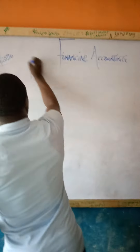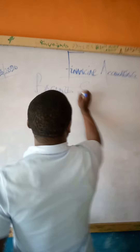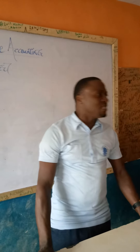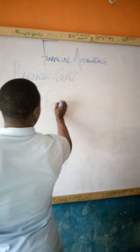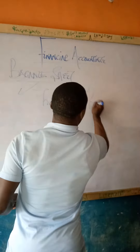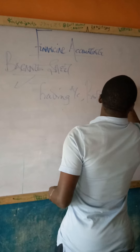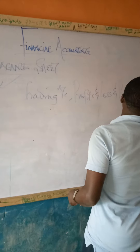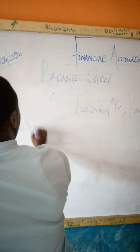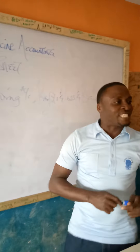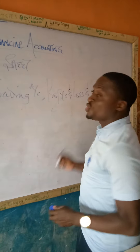What do you understand by the word balance sheet? Can somebody tell me the meaning? Firstly, before we go to balance sheet, what do you understand by final accounts in terms of trading accounts, profit and loss account, and balance sheet? Balance sheet is comprised of trading accounts, profit and loss accounts, and the balance sheet. Trading accounts is an account prepared to determine our gross profit or gross loss. Profit and loss account is an account prepared to determine our net profit or net loss, while balance sheet is just a statement.